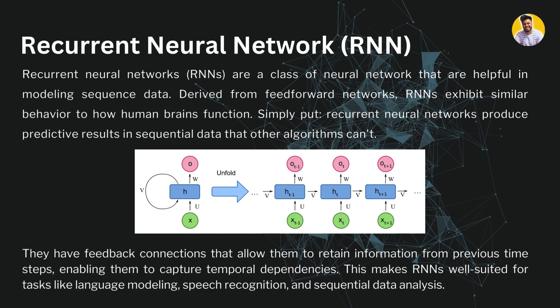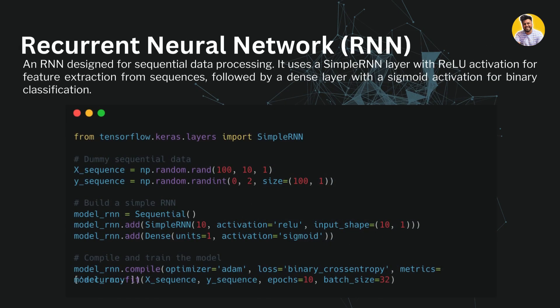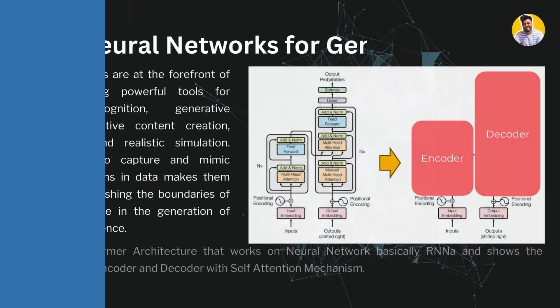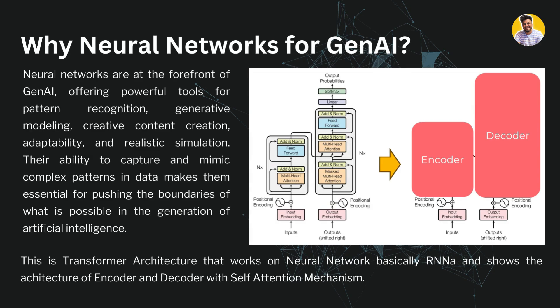Here is a simple binary classification example using a recurrent neural network with a simple RNN. It predicts outputs in the form of zero and one. You can run these codes and check the difference in output accuracy and evaluation across all three network types.